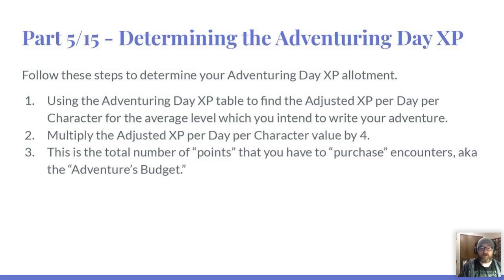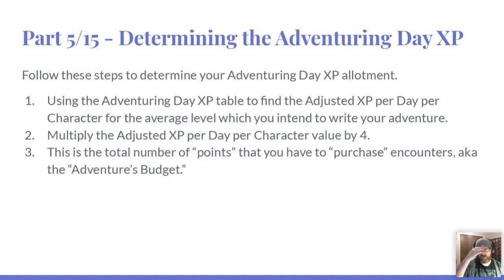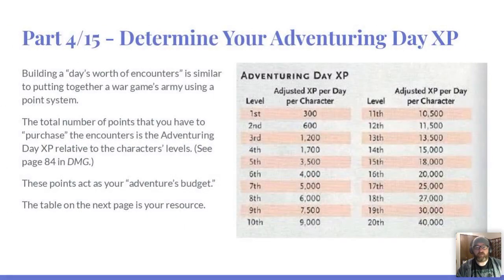In order to determine adventuring day XP, use the adventuring day XP table to find the adjusted XP per day per character for the average level you're writing for, then multiply by the party size. For a party of five, multiply by five; for three, multiply by three. When publishing, you typically write it thinking every character is the same level — a third level adventure assumes everyone is third level. We usually write for four characters. For first level: 4×300=1,200. For sixth level: 4×4,000=16,000 adjusted XP.